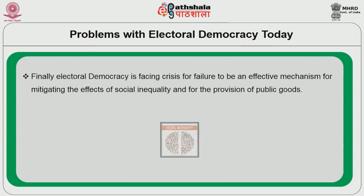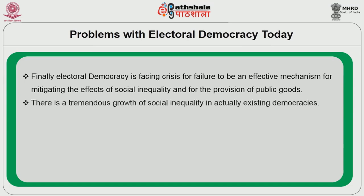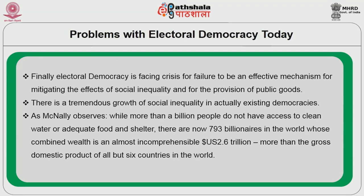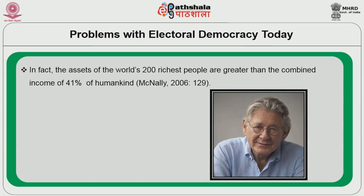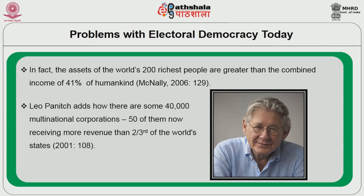Finally, electoral democracy is facing crisis for failure to be an effective mechanism for mitigating the effects of social inequality and for provision of public goods. As McNally observes, while more than a billion people do not have access to clean water or adequate food and shelter, there are now 793 billionaires in the world whose combined wealth is almost incomprehensible at 2.6 trillion US dollars — more than the gross domestic product of all but 6 countries in the world. In fact, the assets of the world's 200 richest people are greater than the combined income of 41% of mankind. Leo Panich adds that there are some 40,000 multinational corporations, 50 of them now receiving more revenue than two-thirds of the world's states.